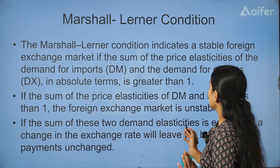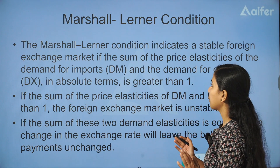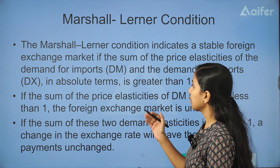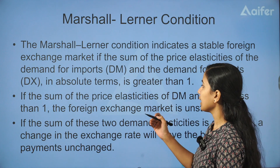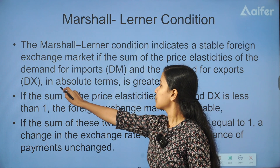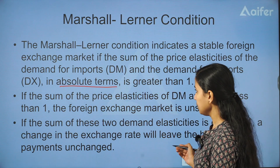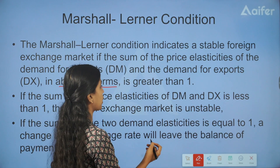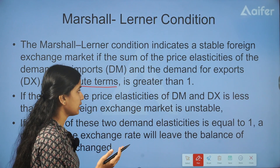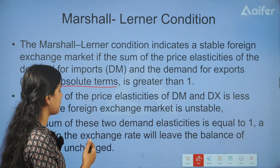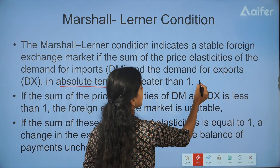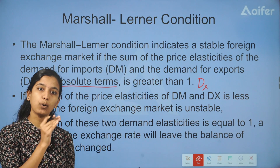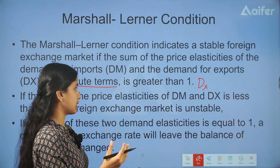This indicates that for a stable foreign exchange market, the sum of price elasticities of demand for imports and the demand for exports in absolute terms is greater than 1. That is, with SM and SX infinitely elastic, the sum of import demand price elasticity and export demand price elasticity must be greater than 1.